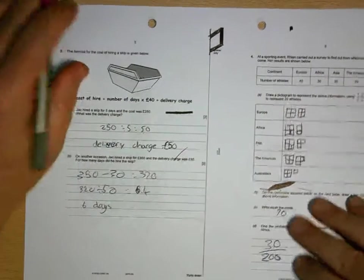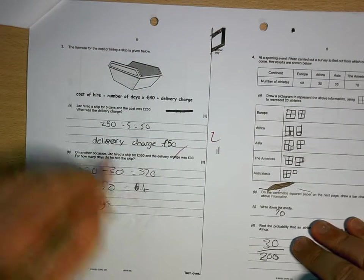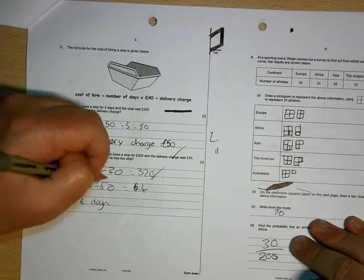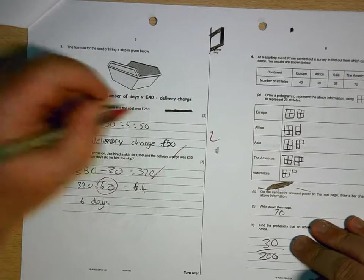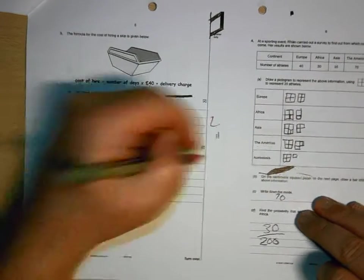50 is correct. Two marks there. 350 is correct. It's not 50, it's divided by 40. So you make that mistake there.